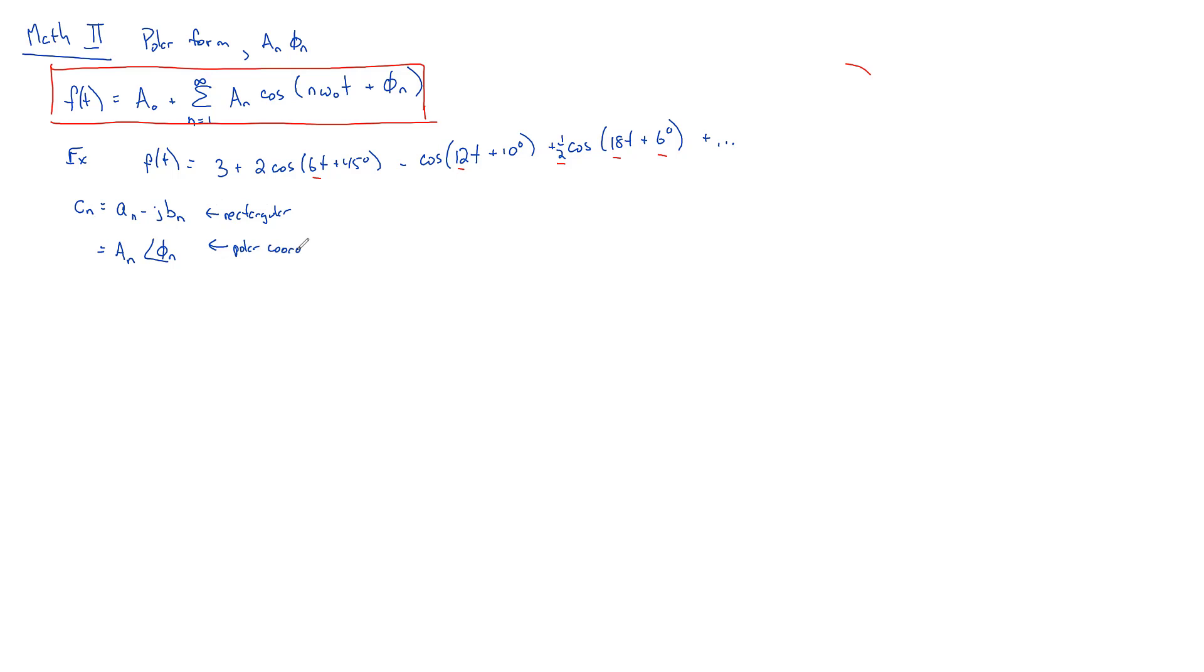And when you construct it in that way, this A sub N is this A sub N. This phi sub N is this phi sub N. And the only thing else that you need to know is how to get that DC term.